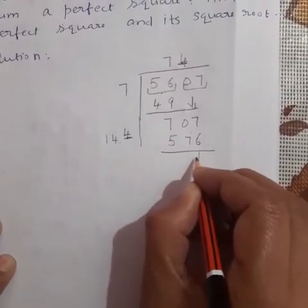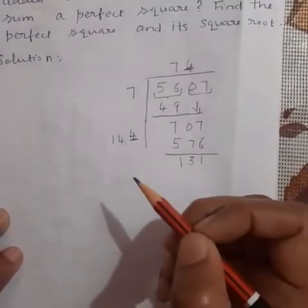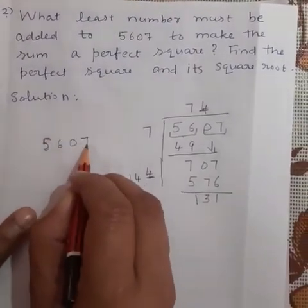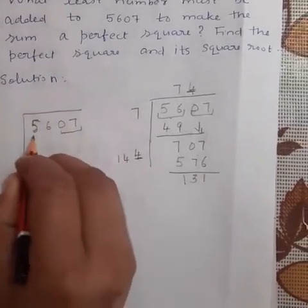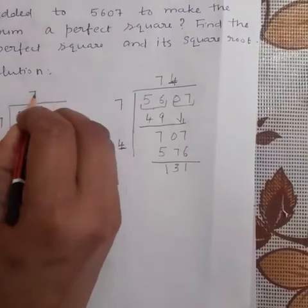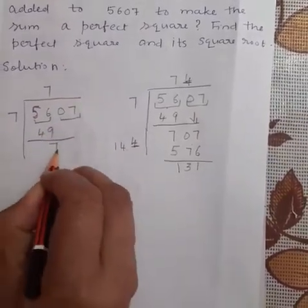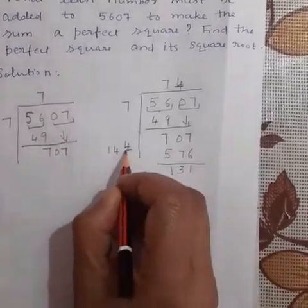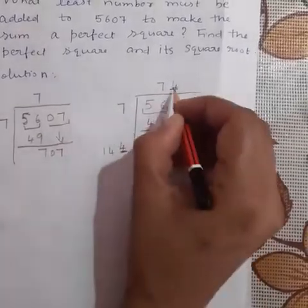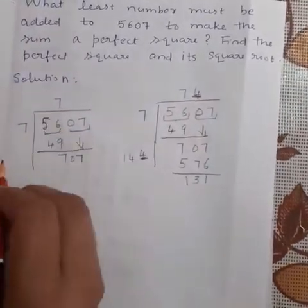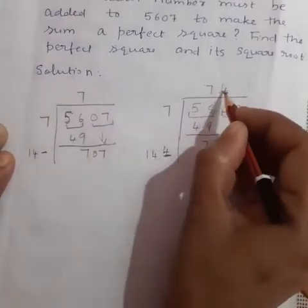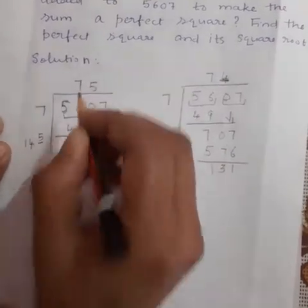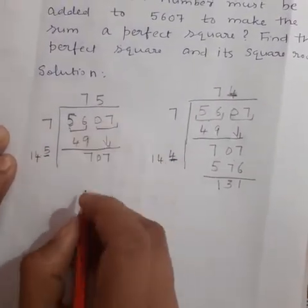Find the remainder. Now we need one more step. Again we do the long division here. We get 7, then 49, remainder 7. Bring down the next pair; our new dividend is 707. In the last step we took 4 here, but now after doubling that digit to get 14, we take the successor of 4, which is 5. Multiply 145 by 5 and we get 725.